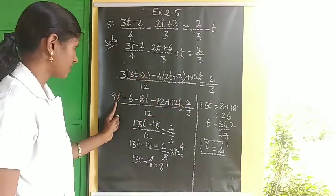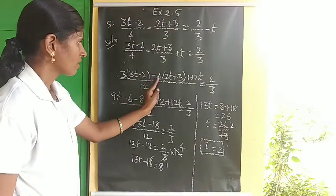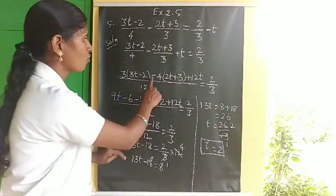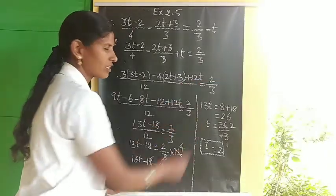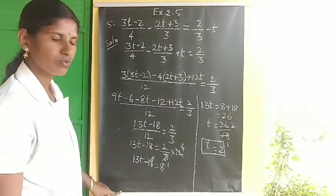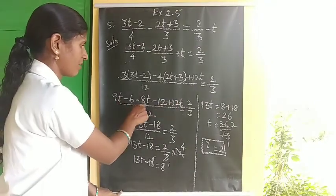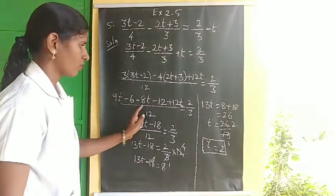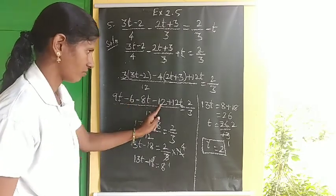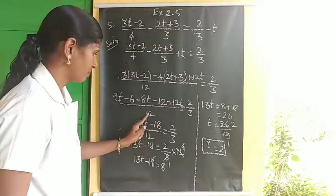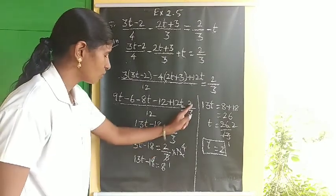Multiplying inside: 3 threes are 9t, 3 twos are minus 6, 4 twos are minus 8t, 4 threes are minus 12, plus 12t, all divided by 12 equals 2 by 3. Simplifying: 9t minus 8t gives 1t, plus 12t gives 13t. Constants: minus 6 minus 12 equals minus 18.